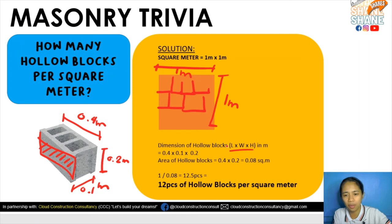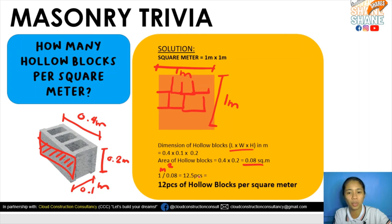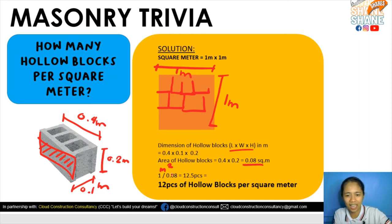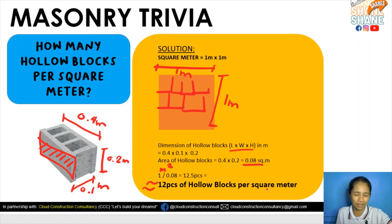Using the area: 0.4 by 0.2 equals 0.08 square meters per hollow block. Then 1 square meter divided by 0.08 is equivalent to 12.5 pieces — so the estimate is 12 pieces of hollow blocks per square meter.